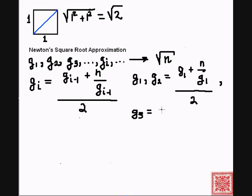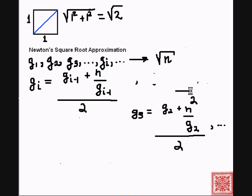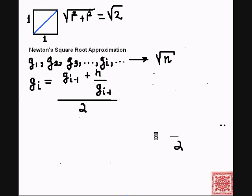It's going to be equal to g2, the previous guess, plus n over g2 over 2, and so forth. Let's erase these derivations to give us more space to work out an example.